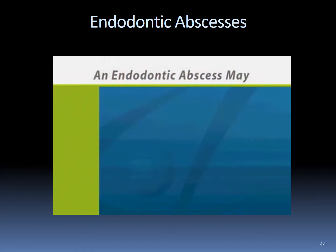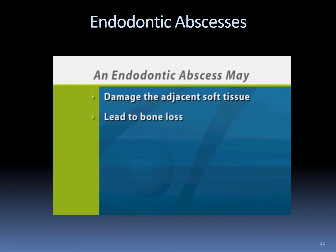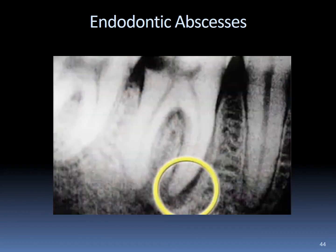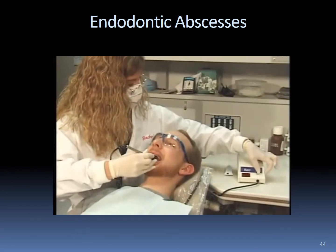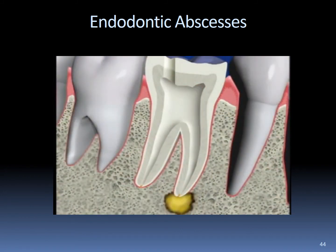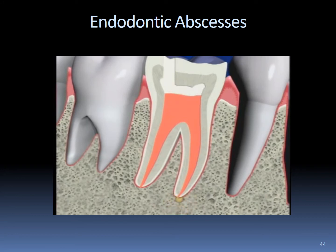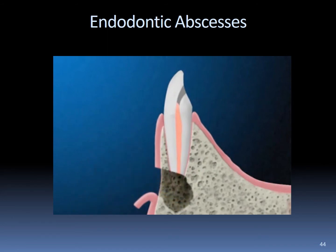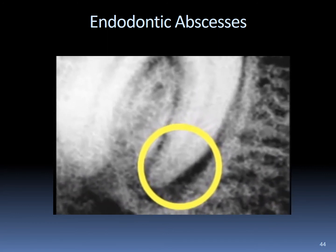Left untreated, an endodontic abscess can damage adjacent soft tissue, lead to bone loss, be a continuing source of infection that drags down the immune system, and even be life-threatening. To find an endodontic abscess, a thorough examination including x-rays is performed; a dark area at the root tip on x-ray indicates the abscess. An electric pulp tester may also be used to determine whether the pulp is inflamed or infected. An infected tooth will never heal on its own. Root canal therapy removes the infection and usually heals the abscess. If infection continues to grow, re-treating with root canal therapy or a surgical apicoectomy will stop the infection and restore the health of the tooth.